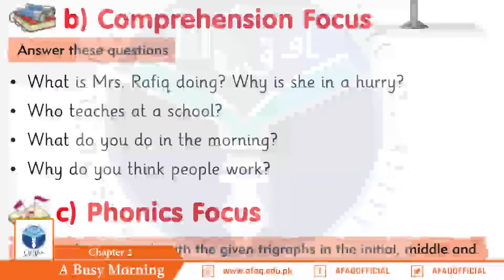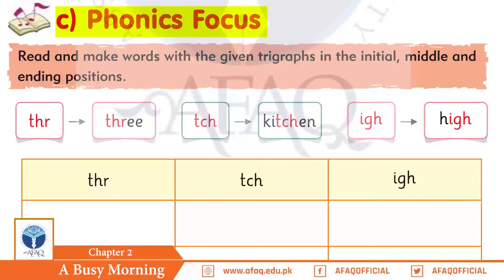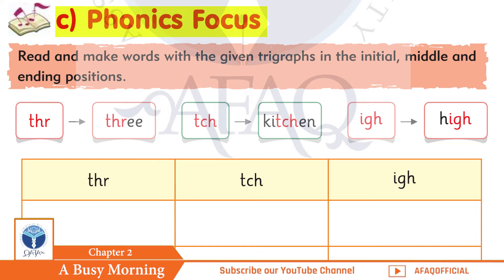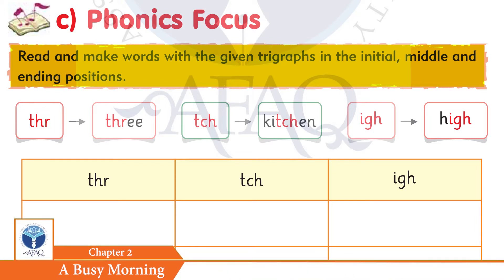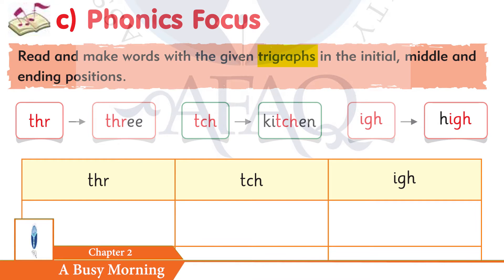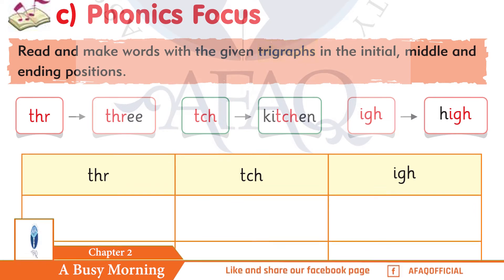Now let's talk about the things you do every morning. Next task is phonics focus on page number 10. In phonics focus today we will see trigraphs — initial, middle, and ending positions — and how we can pronounce them. Trigraphs are when we have three letters that make the same sound; that combination is called a trigraph.